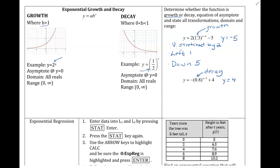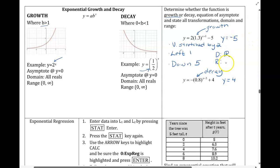As far as domain and range, our domain for all exponential functions would just be all real numbers — it goes left forever and right forever. Our range goes from the lowest most height to the highest most height. Our lowest most height is at negative 5, all the way up to infinity. That asymptote is at negative 5, so it's non-inclusive, and we can never reach infinity, so that's also non-inclusive, indicated with parentheses.